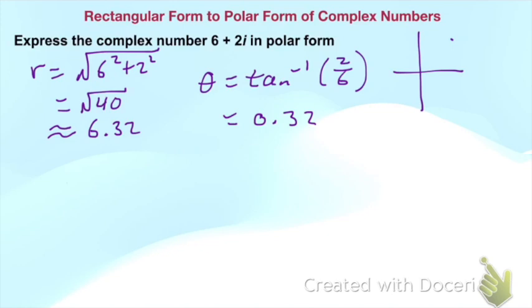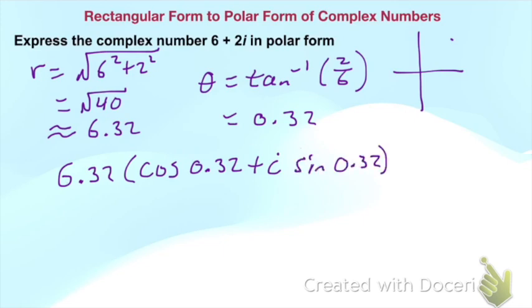From here, we are going to write it into our polar form. So you take the radius: 6.32, we have cos 0.32 + i sin 0.32. This is in radians, and there is my polar form.